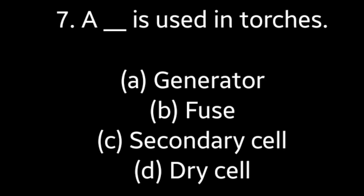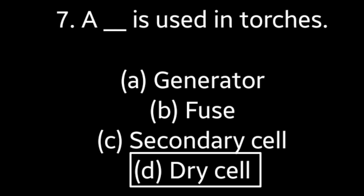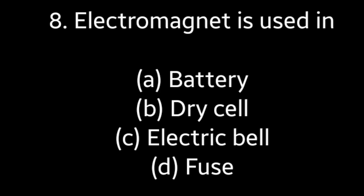Question No. 7: A dash is used in torches — Generator, Fuse, Secondary cell, Dry cell. Answer is Option D: Dry cell.